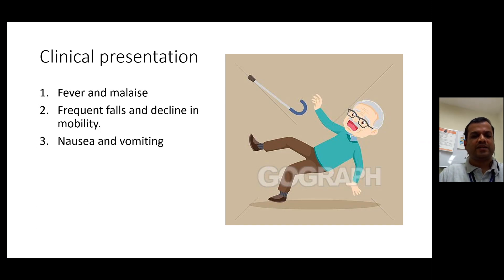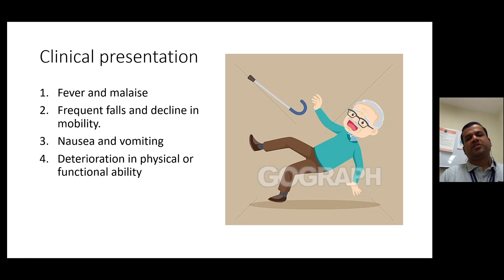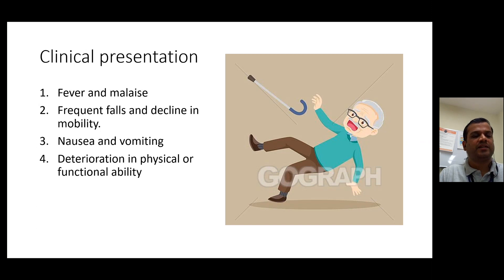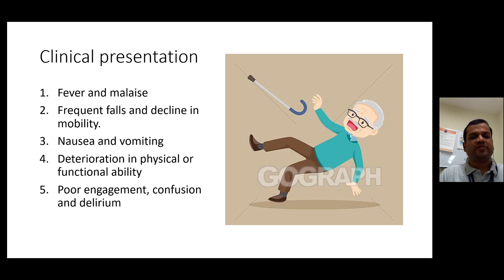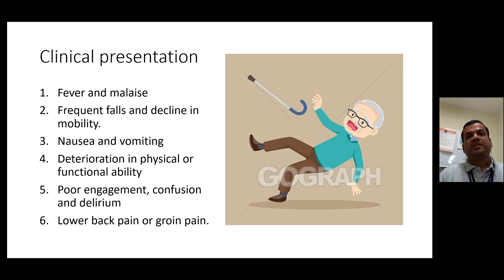Nausea and vomiting are also important factors. Any deterioration in physical and functional ability — if they used to go to the toilet on their own or do bathing on their own, and suddenly they cannot — suspect UTI and consider increasing the package of care. Poor engagement, confusion and delirium — if they used to respond well and all of a sudden seem confused, agitated, or not with it, suspect UTI. If anyone complains of back pain or groin pain, also keep your suspicion for UTI, because that's how UTIs can present.